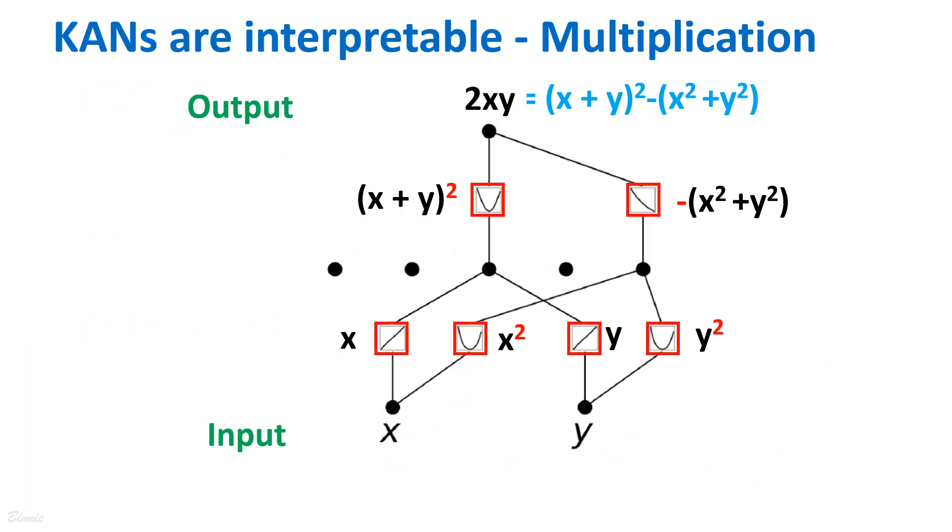In this section, we can explore the interpretability of KAN using a specific example, multiplication. For instance, a pruned KAN is obtained. The learned activation functions in this case are linear and quadratic. By examining the computation graph, we can observe that the KAN leverages the relationship to compute the multiplication of x and y.